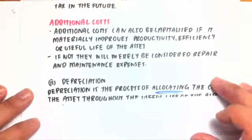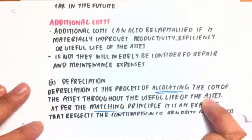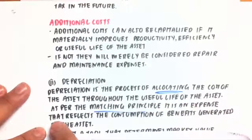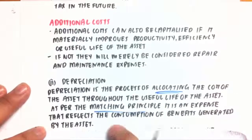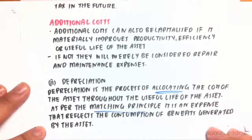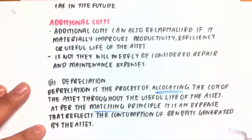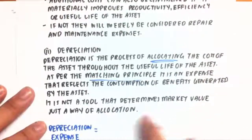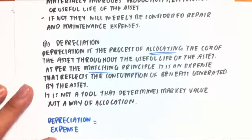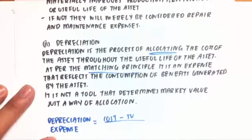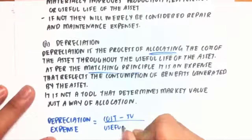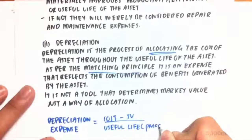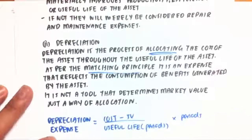Depreciation is the process of allocating the cost of the asset throughout its useful life. As per the matching principle, it is an expense that reflects the consumption of the benefits generated by that asset. We need to recognize the depreciation expense with the revenue together in the same financial period. It's not a tool that determines market value — it's just a way of allocation. The depreciation expense equals the cost minus the salvage value, giving the total depreciable amount, divided by the useful life in number of periods, times the number of periods since last depreciation.